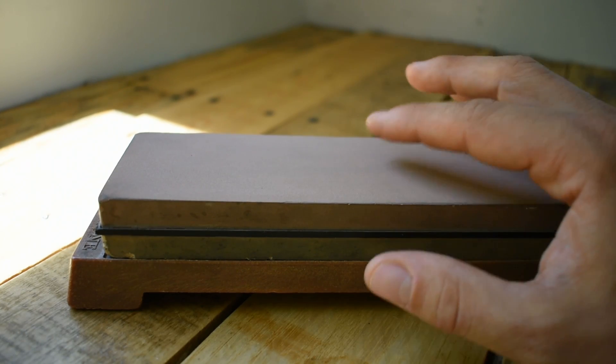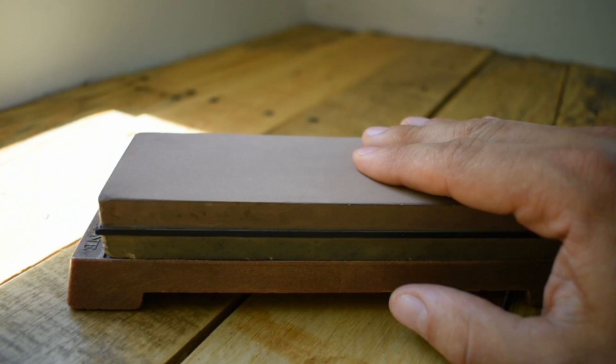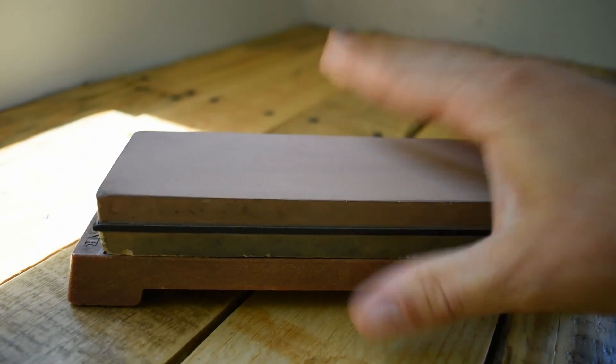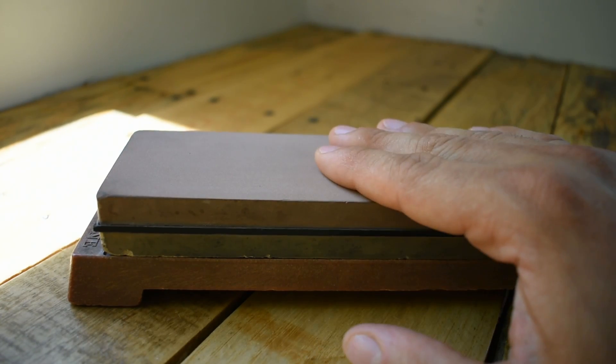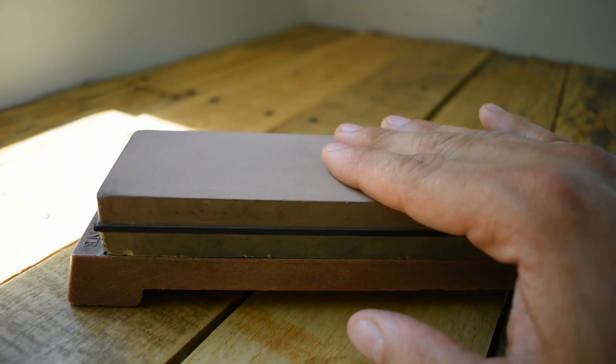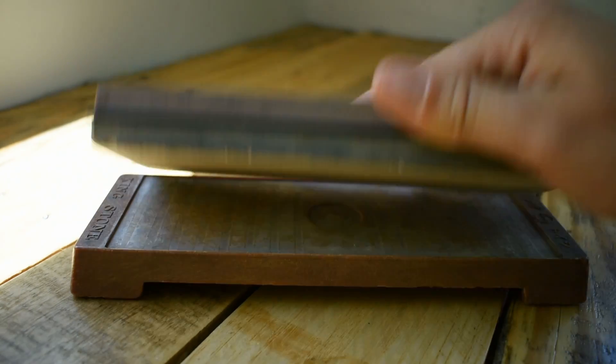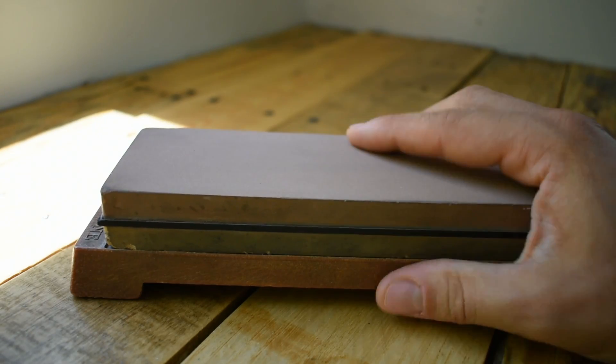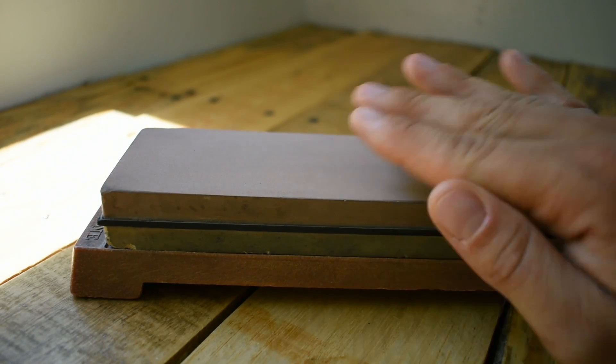Now my stone is two sided. I've got a 1000 and then a 6000. I use the 1000 to put a new edge on and make my knife sharp and then I use the 6000 side to really refine it, polish it up, make it look nice and get it nice and sharp.